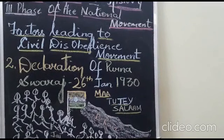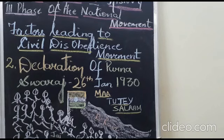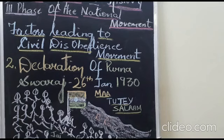The next reason for Gandhiji to launch the Civil Disobedience Movement was the declaration of Poorna Swaraj. The Calcutta Session of Congress had served an ultimatum to the British government to accept the Nehru Report by the end of 1929 or face a mass movement. Since no positive response came, the Nehru Report was declared lapsed at the Lahore Session of 1929, which passed a resolution demanding Poorna Swaraj — or Complete Independence.